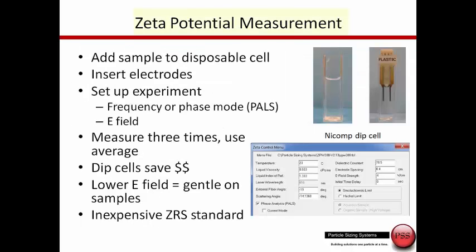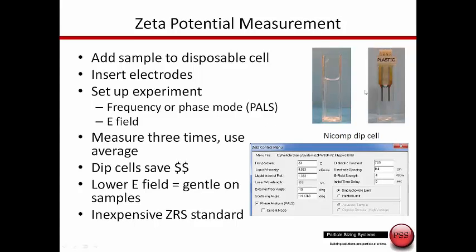The system can also be configured to measure zeta potential, which is a measure of the charge on the surface of particles. This is an easy measurement to make. We take a plastic disposable cell, fill three quarters with the sample, insert our dip cell, and these electrodes are going to apply the electric field and we take the measurement.